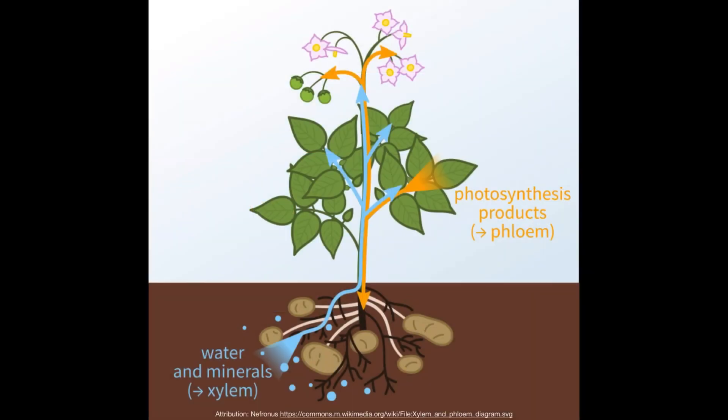Finally, let us not forget transport within plants. Plants have a xylem and a phloem. In the xylem, water is transported along with dissolved minerals in the xylem sap. In the phloem, we have the transport of sucrose and other products of photosynthesis within the phloem sap.